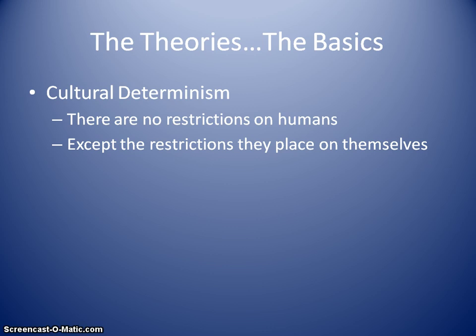There are other theories out there — there's humans as modifiers, just as an example — but we're not going to go over those. These are just the three presented in the Rubenstein text, and they're the three basic ones that we need to be aware of.